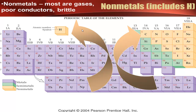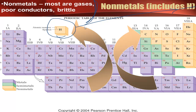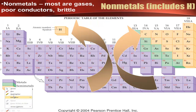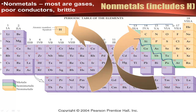Your non-metals are found to the right of that staircase. At room temperature, most are gases. They are poor conductors of electricity, and they are brittle. Hydrogen is included in the non-metals. Some people say hydrogen should go on the right-hand side of the periodic table, and we'll see later why it gets included on the left-hand side. That staircase line helps you: things to the right of the staircase are your non-metals, plus hydrogen.